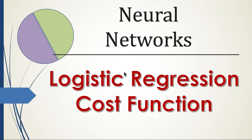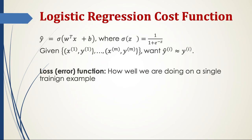In order to train the parameters of logistic regression, we need to define a cost function. Just a brief recap of what we saw in the previous video: we calculate the weighted sum of the input, add a bias, and get a value we call z. In particular, z_i — where superscript i denotes the i-th training example — is w transpose x_i plus bias.